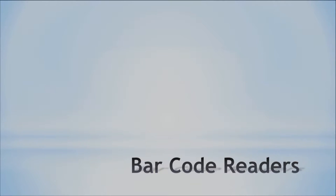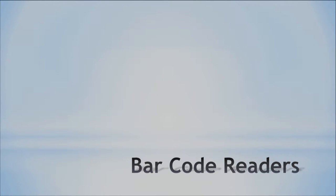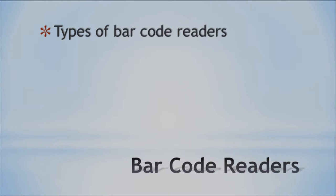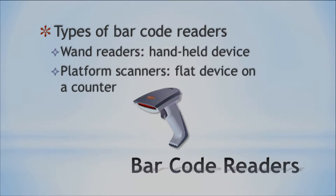Now, barcode readers. The barcode is those zebra stripe lines on many products that you see, and the reader reads these barcodes with whatever information they have. They come in two different styles: one is a wand reader — a handheld device you can use to read the product information on barcodes. The other is a platform scanner — a flat device. You might see that at grocery stores, where they're just swiping products over the little counter. Sometimes you've got both at the same stand.